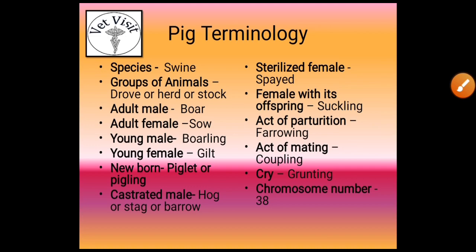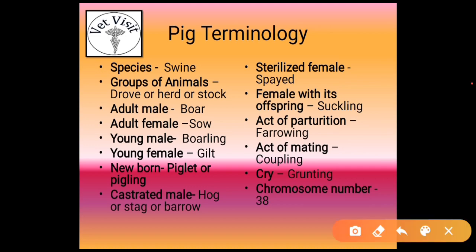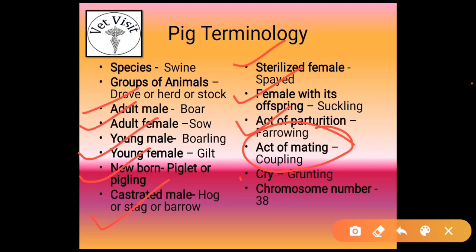For pig, the species is known as swine. Group of pigs is known as drove, herd, or stork. Adult male of pig is known as boar. Adult female is known as sow. Young male is called boarling. Young female of pig is gilt. Newborn pig is called piglet or piggy. Castrated male of pig is known as hog, steg, or barrow. Sterilized female is known as spayed. Female with its offspring is known as suckling. Act of parturition in pig is known as farrowing. Act of mating is known as coupling. Crying in pig is known as grunting. Chromosome number is 38.